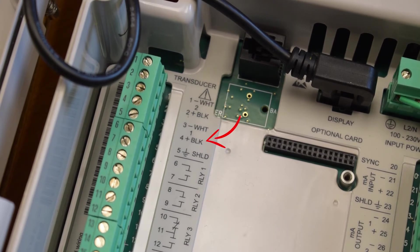Transducer 1, which is the upstream transducer, will be wired to terminals 3 and 4. Again, match the white and black wires as shown. The shield from each transducer should be landed to terminal 5.